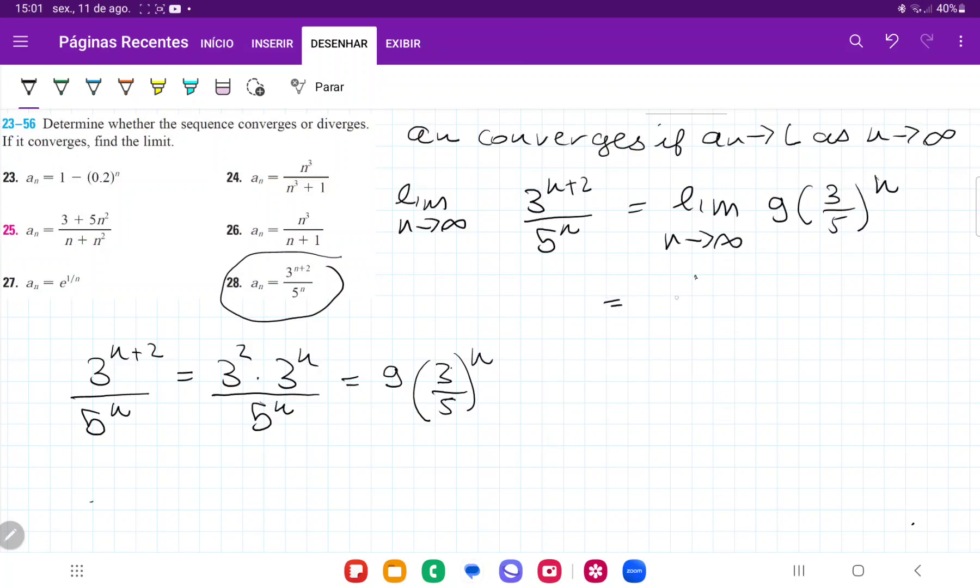Which is equal to 9 times the limit. We can pull that 9 outside because it's just a constant, as (3/5)^n.